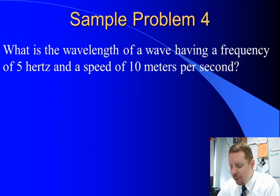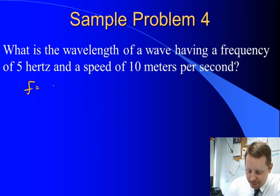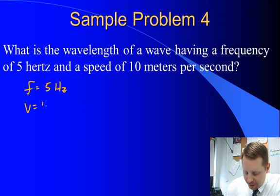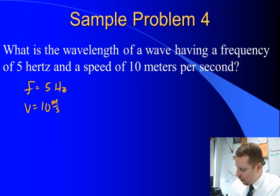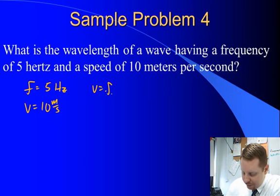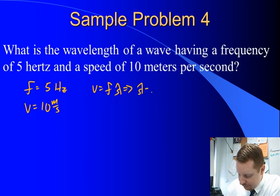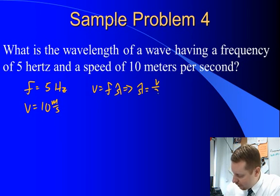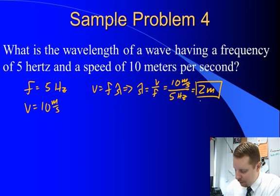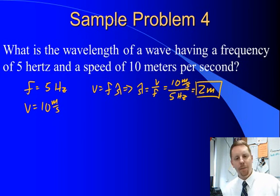Let's see how this works. What is the wavelength of a wave having a frequency of 5 hertz, frequency is 5 hertz, and a speed of 10 meters per second? Well, if velocity is equal to frequency times wavelength, then we could say that wavelength equals velocity over frequency, or 10 meters per second, divided by 5 hertz, or 5 over seconds, is going to give us a wavelength of 2 meters. Pretty straightforward.